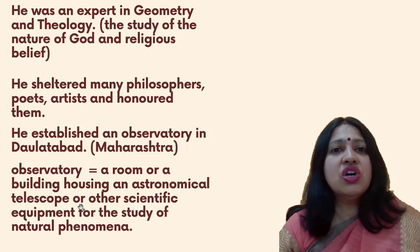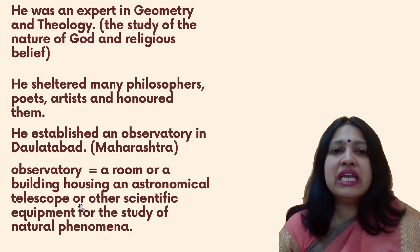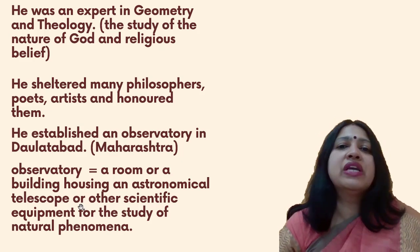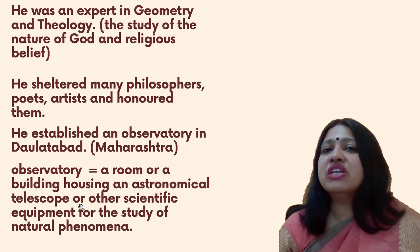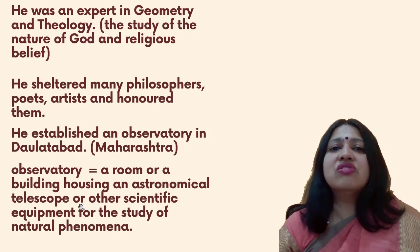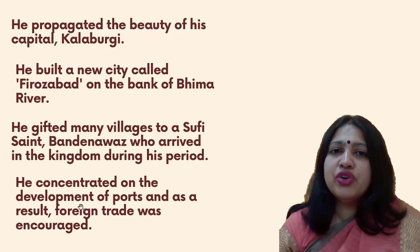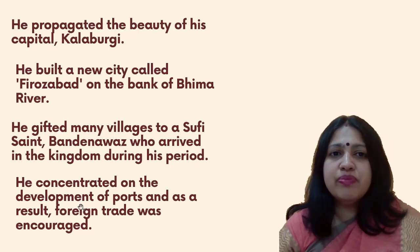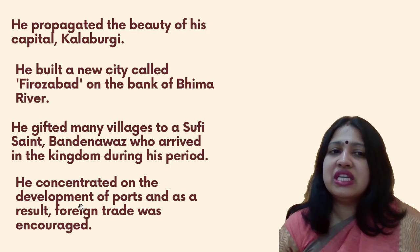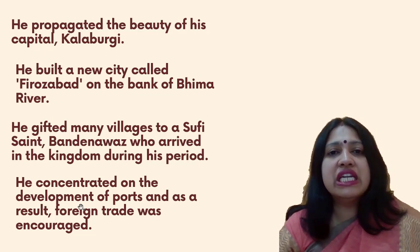Feroz Shah established an observatory in Daulatabad, which is in present-day Maharashtra — a building housing astronomical telescopes and scientific equipment for the study of natural phenomena. He propagated the beauty of his capital Kalburgi and built a new city called Firoza Path on the bank of the Bhima River. He also gifted many villages to the Sufi saint Bandhan Nawaz, who arrived in the kingdom during his reign.